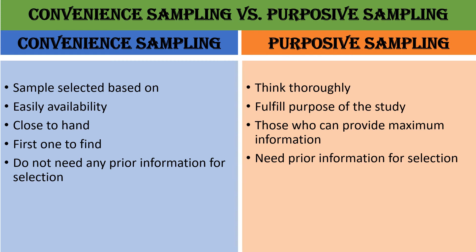From the above examples we understood that in convenience sampling, the sample is selected based on availability. Easily available samples are selected, or those members are selected who are close to hand or the first ones to find. Researchers do not need any prior information for selection of sample in case of convenience sampling. Whereas in purposive sampling, the researcher thinks thoroughly to fulfill the purpose of the study. The researcher will carefully reject those members who do not meet the expected criteria, and will select those members who can provide maximum information.